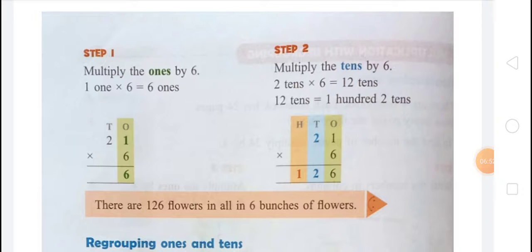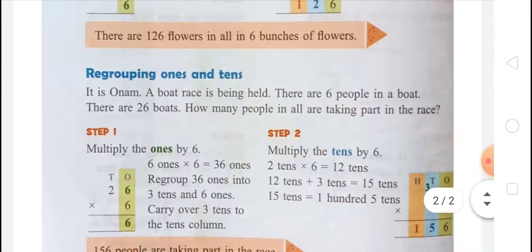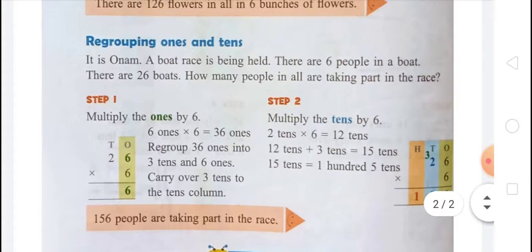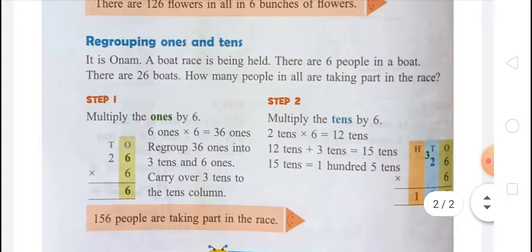So there are 126 flowers in all 6 bunches of flowers. The next section is regrouping ones and tens.